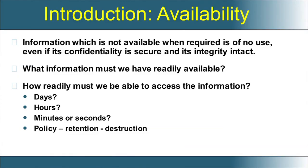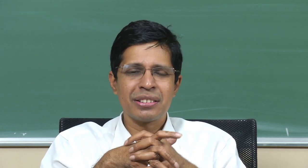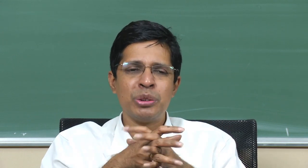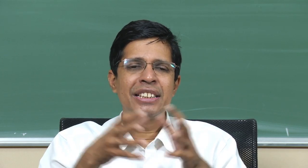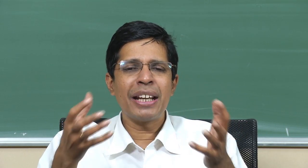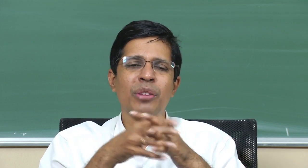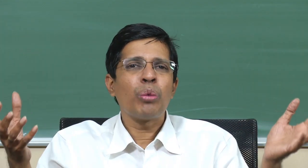Now we will go to the third point: availability. What is availability? We define it as information that should be available to an authorized user, in the form that is needed by the user, maintaining the required format, integrity, and confidentiality — and this data should be made available within some fixed amount of time. All these things are involved when we try to define availability.